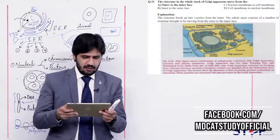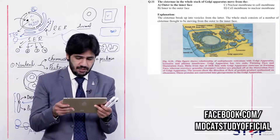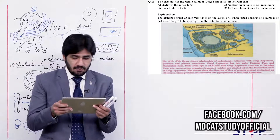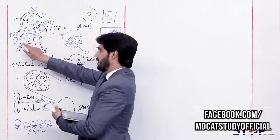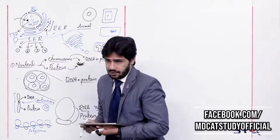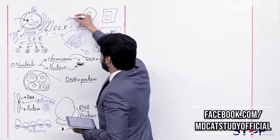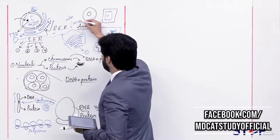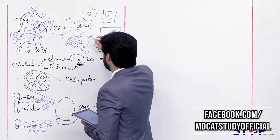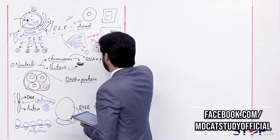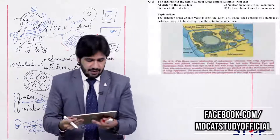Question 11: The cisternae in the whole stack of Golgi apparatus move from (alpha) outer to inner face, (beta) inner to outer face, (charlie) nuclear membrane to cell membrane, (delta) cell membrane to nuclear membrane. The Golgi apparatus has an outer (convex) face called the forming face, and the other end is the maturing face, which is concave and is called the inner face. So the movement is from outer to inner. The right answer is alpha — outer to inner surface.